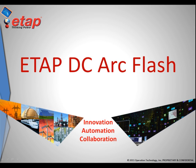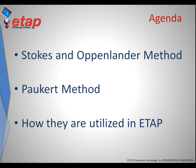Welcome to ETAP's video tutorial on DC Arc Flash. In today's agenda, we will be talking about two of the three available methods used to perform a DC Arc Flash analysis within ETAP. The first method is the Stokes and Oppenlander method, developed by A.D. Stokes and W.T. Oppenlander. The next method is the Pochert method, developed by J. Pochert. We will also be illustrating how to utilize these methods within ETAP.